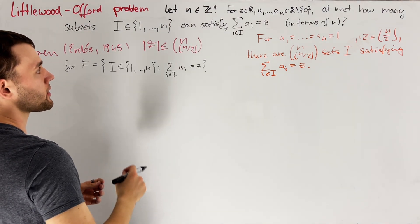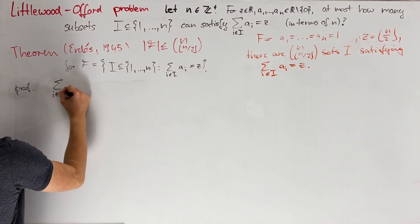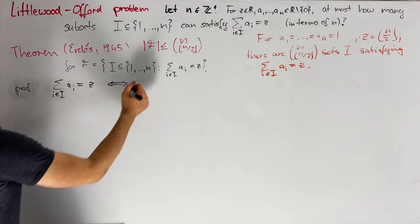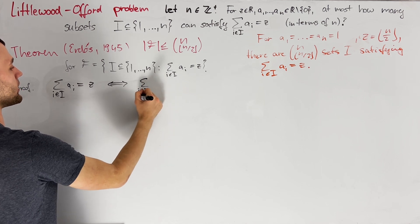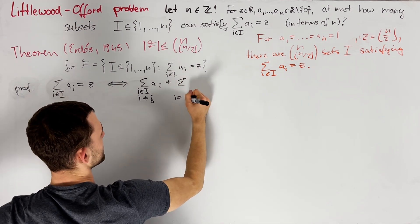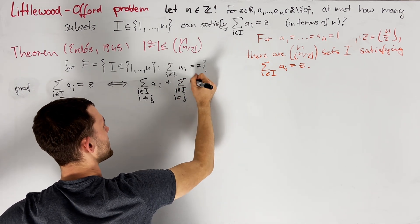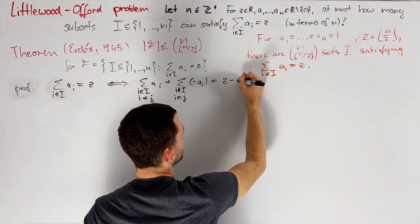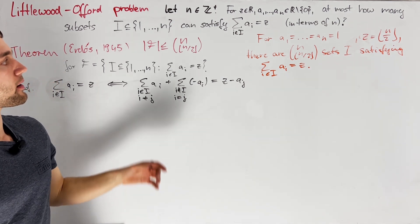I want to start the proof by noticing that we can basically flip the sign of ai however we want. Namely, we have that the sum of i in i ai being equal to z is equivalent to the same condition where now we flip whether some index j lies in i. So we write sum over i in i, i not equal j, ai plus the sum where now i is just j and we only sum if i is not in i of minus ai. So we also flip the sign of that one and replace z by z minus aj. The basic idea here is that if we start from this equation and subtract aj from both sides, then there are two cases.